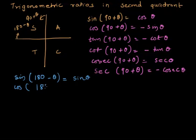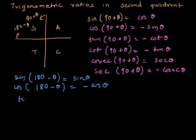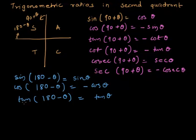Cos of 180 minus theta — cos is negative in the second quadrant, so negative; because of this 180 degree, cos remains cos theta. Then tan of 180 minus theta — tan remains tan, tan is negative in the second quadrant, so negative.